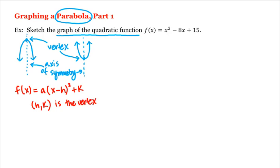If a is greater than zero, then the parabola will open upward. And if a is less than zero, then the parabola will open downward. But how do we get a quadratic function that's in standard form like ours here into vertex form?